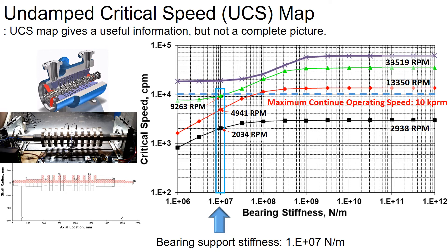Going back to the undamped critical speed map — say your compressor has a maximum continuous operating speed of 10,000 rpm and a bearing support stiffness of 10^7 Newton per meter. Then when you spin up the rotor from zero to 10,000 rpm, you will encounter three separate critical speeds at around 2,000 rpm, 5,000 rpm, and 9,200 rpm, which are the first, second, and third critical speeds respectively. Note that the third critical speed coincides with the maximum operating speed, where you can expect large vibration. It is recommended to avoid running the machine at critical speed for long periods. However, if you provide enough damping from the bearing support, you can substantially reduce the rotor motion while passing through the critical speeds.